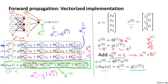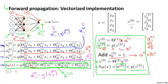This process of computing h of x is also called forward propagation. And it's called that because we start off with the activations of the input units and then we sort of forward propagate that to the hidden layer and compute the activations of the hidden layer. And then we sort of forward propagate that and compute the activations of the output layer. But this process of computing the activations from the input, then the hidden, then the output layer, that's also called forward propagation. And what we just did was we worked out a vectorized implementation of this procedure. So if you implement it using these equations that we have on the right, this will give you an efficient way, a relatively efficient way of computing h of x.